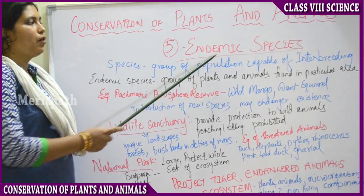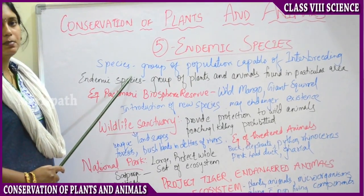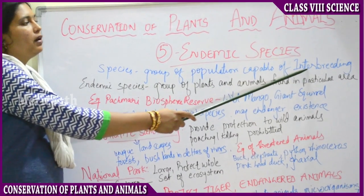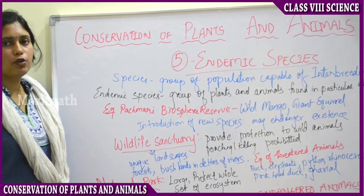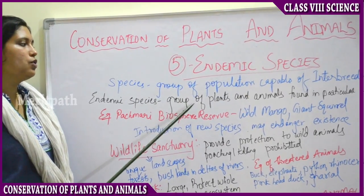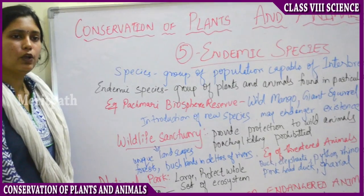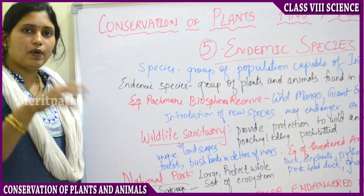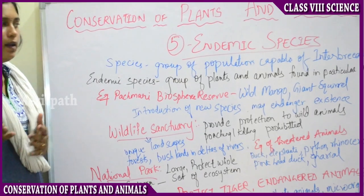The next topic is endemic species. What do you understand by the term species? A species is a group of population capable of interbreeding — meeting with each other and producing new offspring. An endemic species is a group of animals and plants found only in a particular area, such as a biosphere reserve, sanctuary, or specific habitat. They will not be found in any other area.